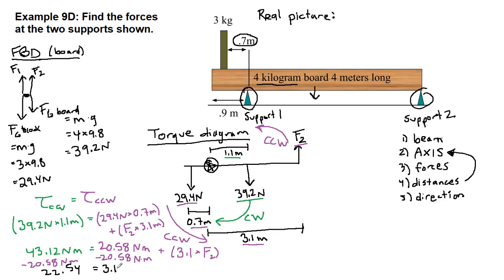So if we divide both sides by 3.1, we have 22.54 over 3.1, that's going to equal our unknown force. And so when we do that calculation, we will get 7.27 newtons. So 7.27 newtons or 7.3 newtons are both fine. All right, that's one of our unknown forces.